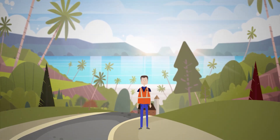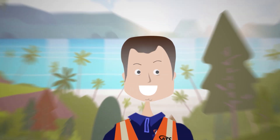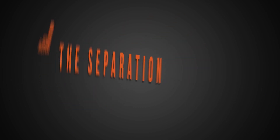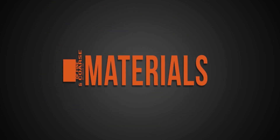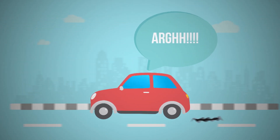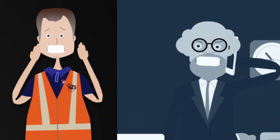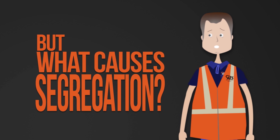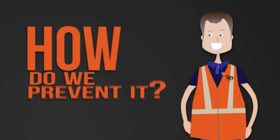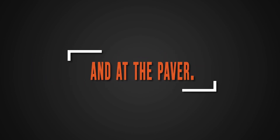We've all seen it — the paving crew is moving along, the pace is going well, and then you notice it: segregation in the mat. Simply stated, segregation is the separation of fine and coarse materials, creating a rough surface texture. Segregation affects smoothness, accelerates pavement damage, and leaves the client unhappy. But what causes segregation, how do we find the source, and how do we prevent it?